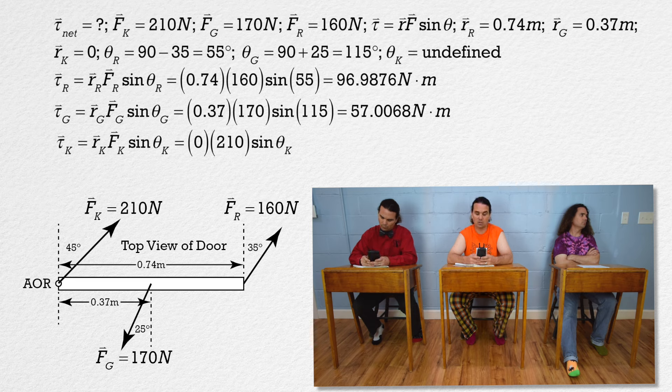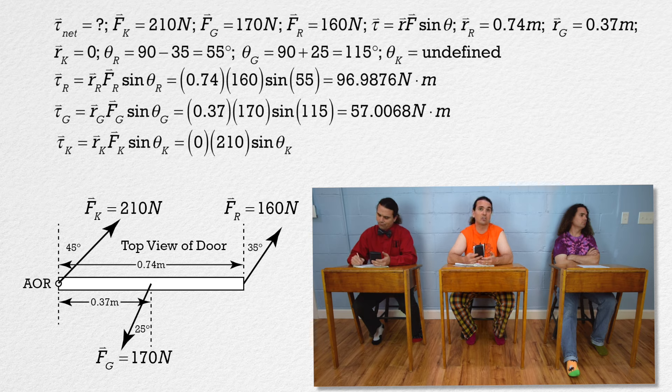Kate's torque equals 0 times 210 times the sine of... oh yeah, that's right, it's undefined, and it doesn't matter anyway because we're multiplying by an r of zero, so Kate's torque works out to be zero.